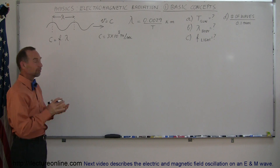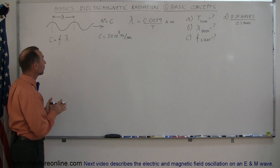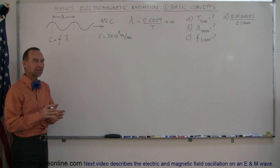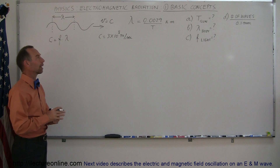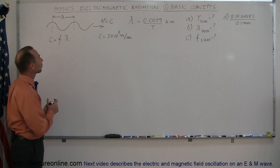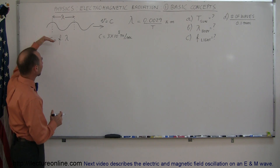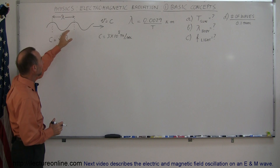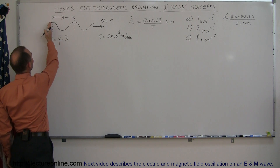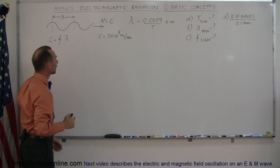Electromagnetic Radiation is kind of like a wave. It has wave-like properties and particle-like properties, but at the macro scale we're going to talk about it as a wave. Like any other wave, it has wavelengths — that's the distance from one peak to the next peak in a wave.